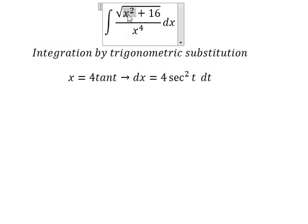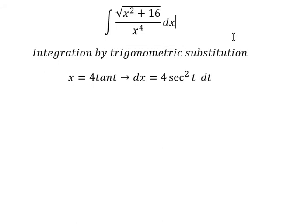We get 16 tan²(t). We factor out 16, giving 16 times (tan²(t) + 1). We can apply the factorization to get tan²(t) + 1 = sec²(t). Then we simplify by taking the square root.